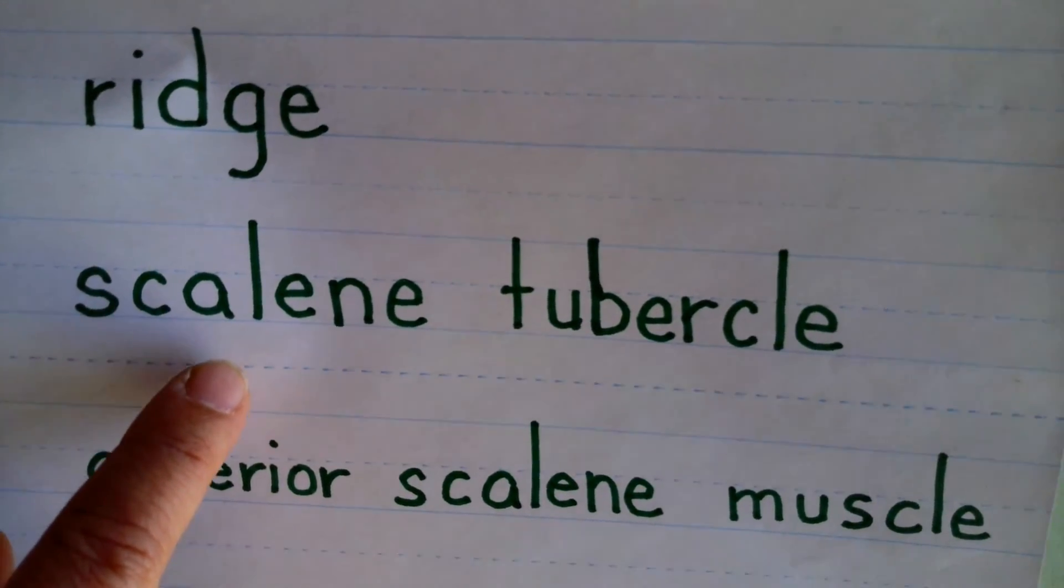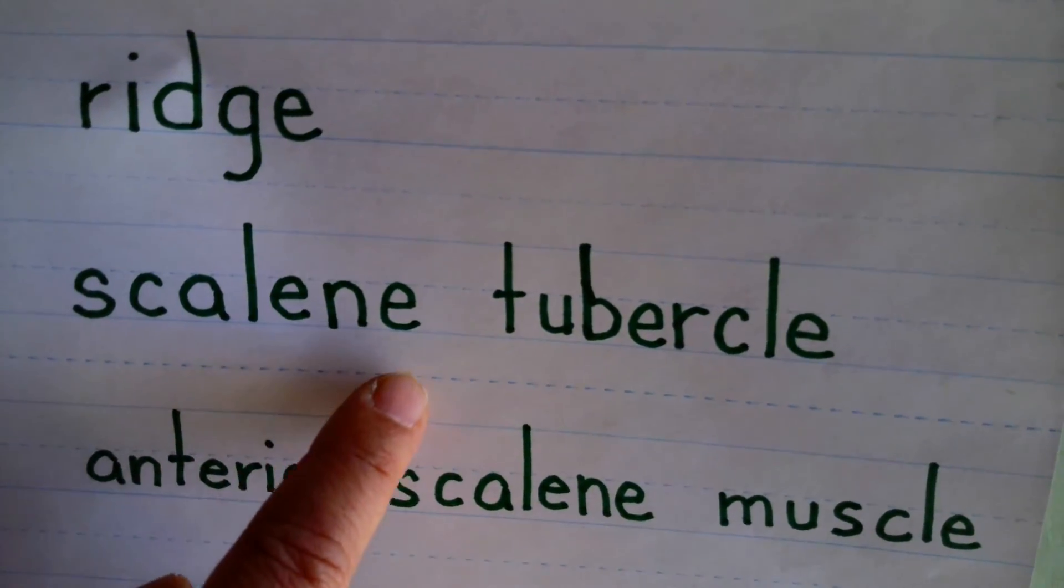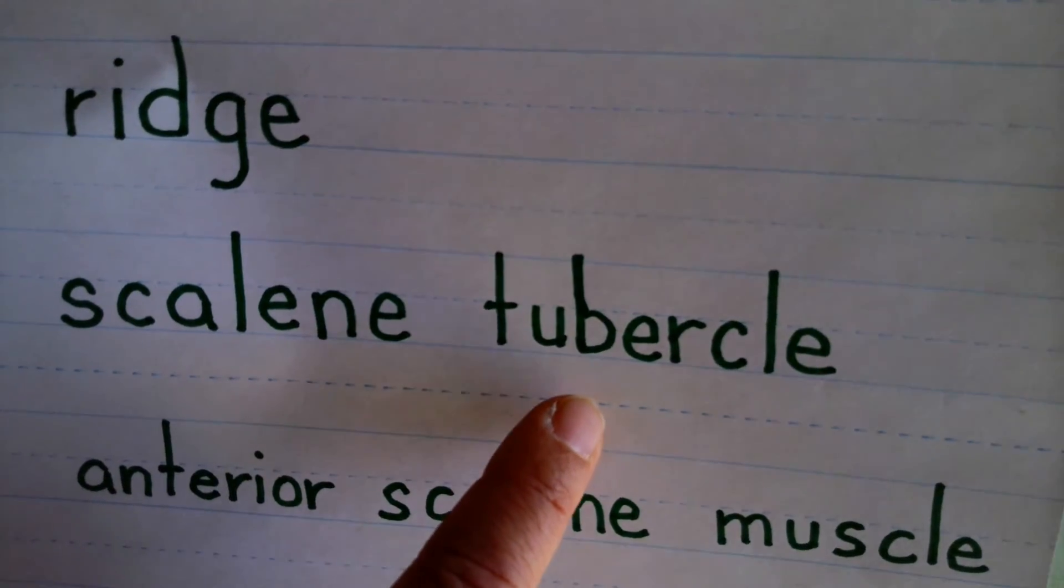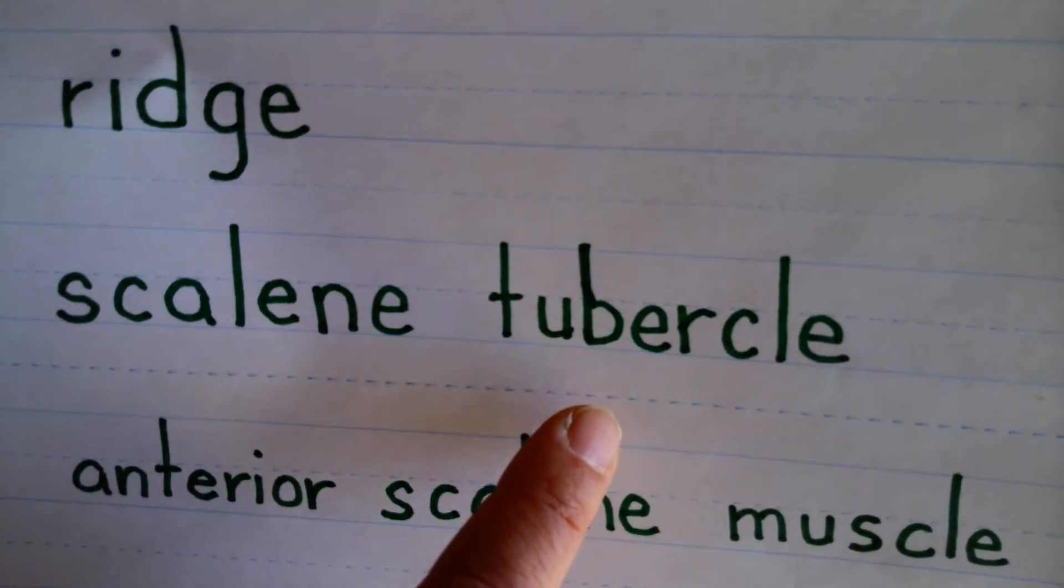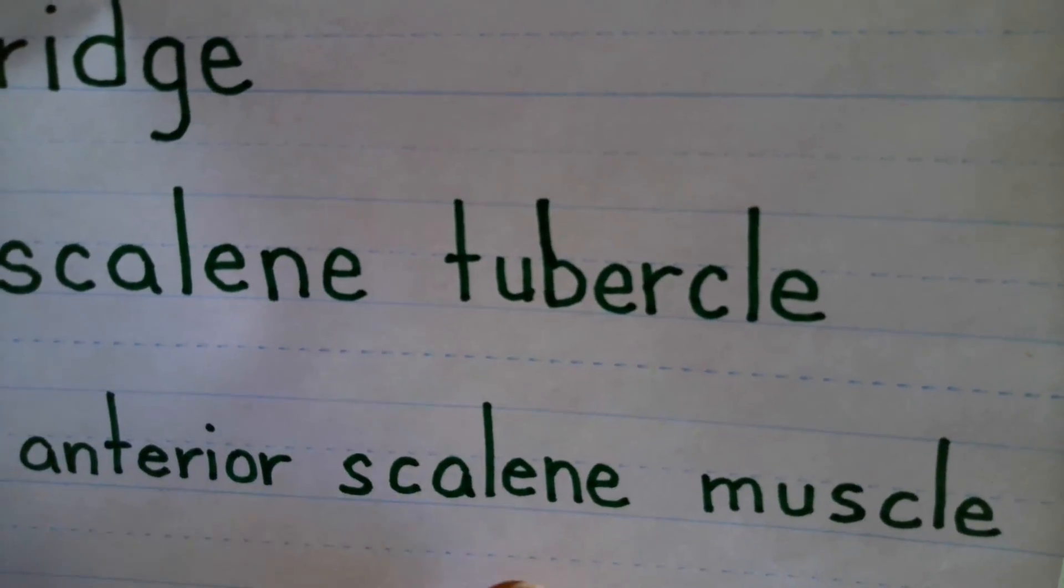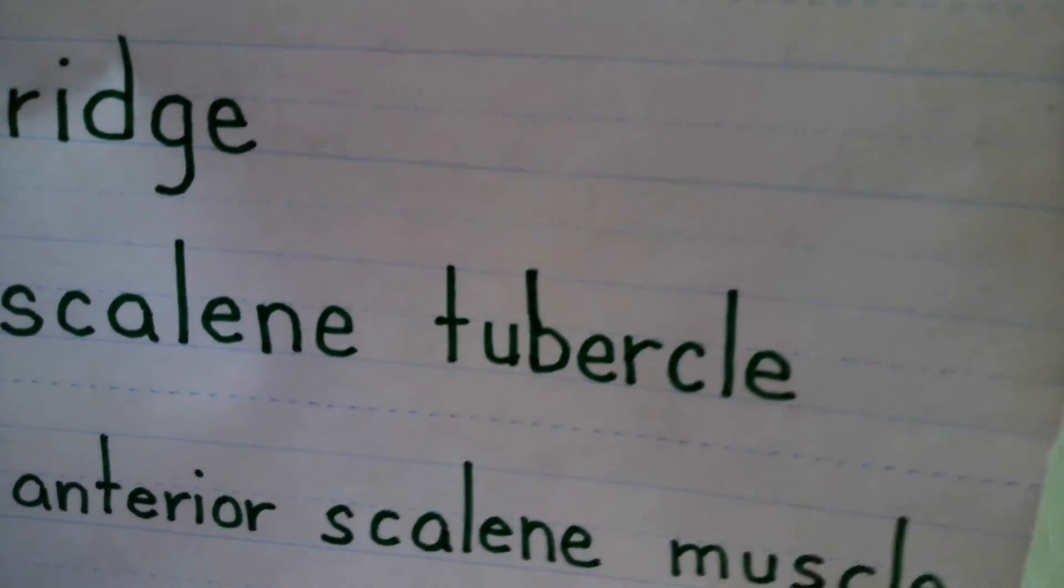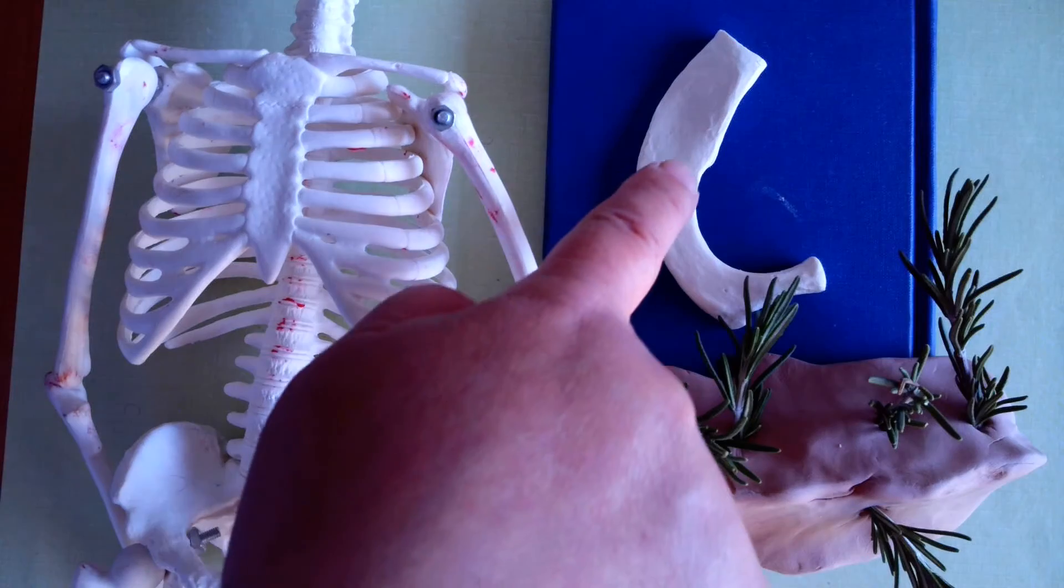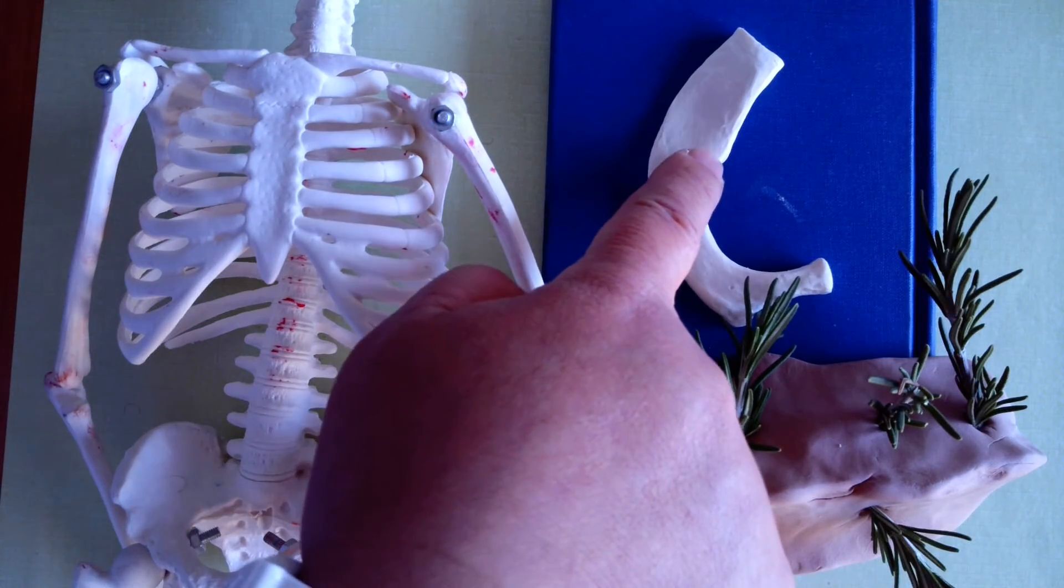Scalene tubercle is the small projection that we can see on the internal border of the first rib. And the anterior scalene muscle is the muscle that is attached in this portion of the first rib.